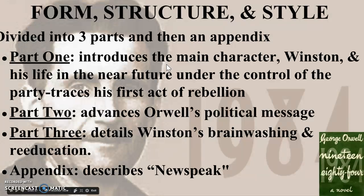The form and structure: the book is divided into three parts and an appendix. Part one gives background information on the characters, we see the society as it is, and we see the beginning of Winston's rebellion. Part two advances Orwell's political message. Part three details Winston's brainwashing and reeducation after his rebellion. And the appendix describes Newspeak.